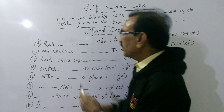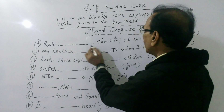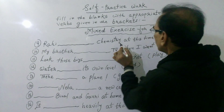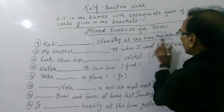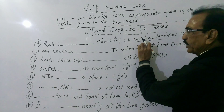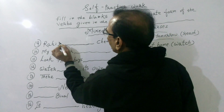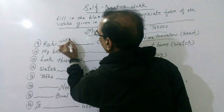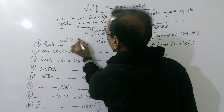Sentence number nine: Rahi dash Kamishti at this time tomorrow. The keyword here is 'at this time tomorrow', which denotes continuous future tense. So the correct answer is: Rahi will be reading Kamishti at this time tomorrow.